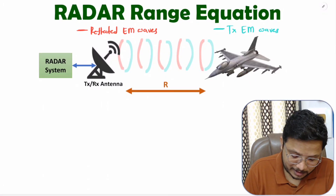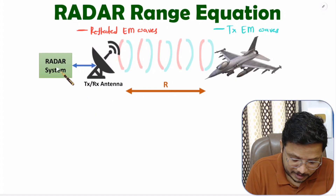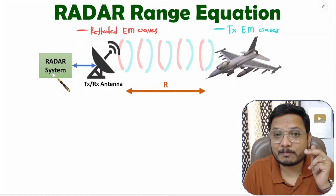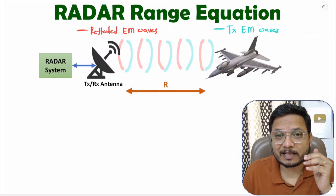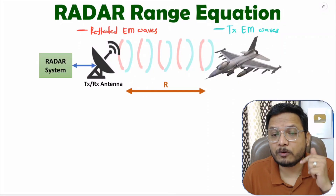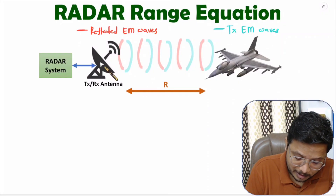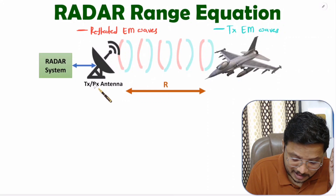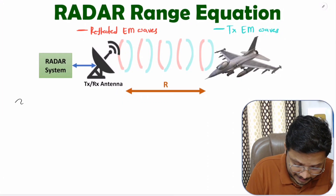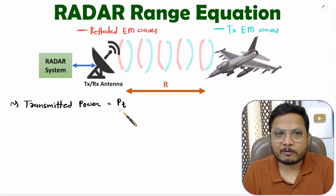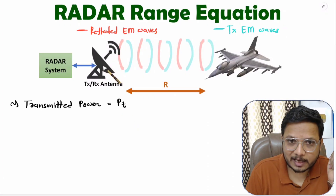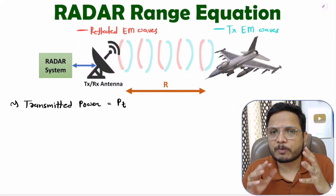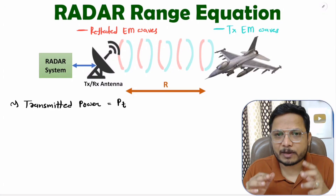First, you need to understand this transceiving system with the radar, which is transmitting high power. Let us assume the transmitted power by the antenna is Pt, and usually that will be in terms of kilowatts to megawatts. To explain these things more clearly, I'll first consider an isotropic source instead of this antenna.